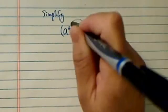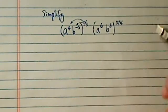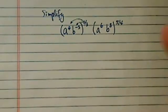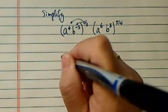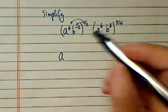So the first thing you want to do is make sure you know this one is really a distribution. So let's write it big and write it slow.